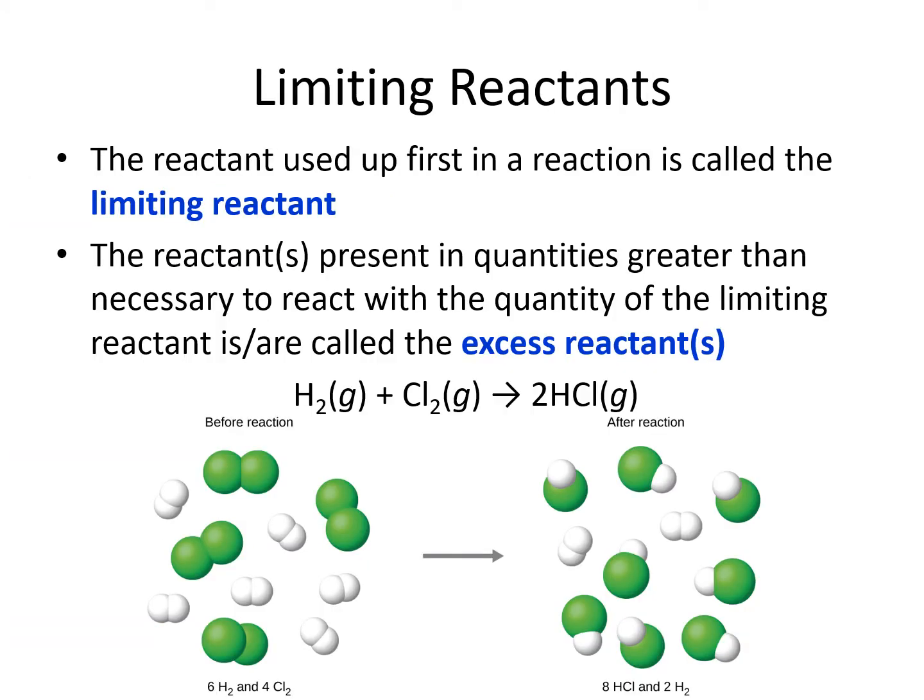Unless you plan out your reaction perfectly, there's probably going to be some of your starting materials left over in the end. The substance that gets used up first in the reaction is going to be called the limiting reactant. It is going to limit the amount of product that's able to be formed. With our grilled cheese sandwich analogy, the cheese was our limiting reactant — we ran out of cheese and it limited the amount of sandwiches we were able to make.